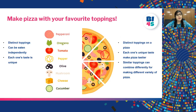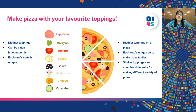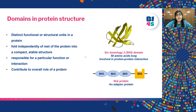After discussing proteins, let's talk a little about food. Different kinds of toppings are available for a pizza — you can have tomato, mushroom or cucumber alone and get the unique taste of that vegetable. But putting toppings on a pizza gives the overall pizza more flavors. Similarly, we have domains in proteins. Domains are distinct functional or structural units in a protein. They can fold independently into a compact stable structure and are responsible for a particular function, while contributing to the overall role of the protein.